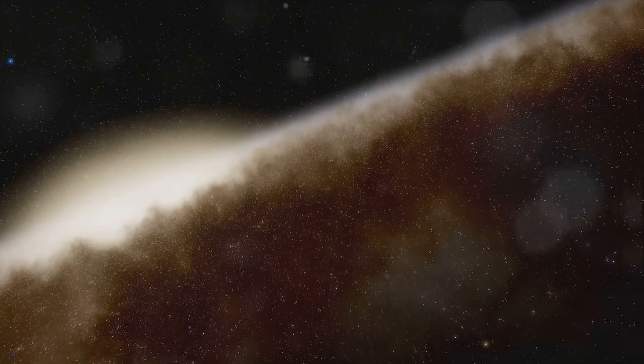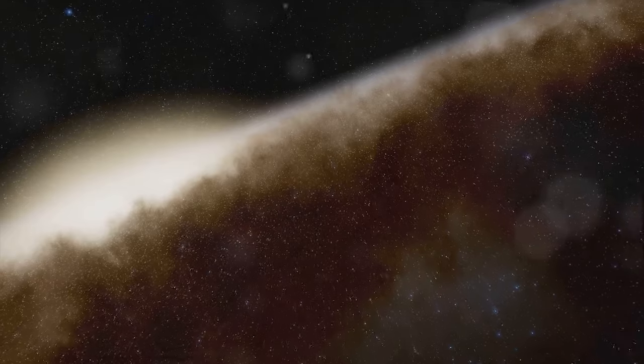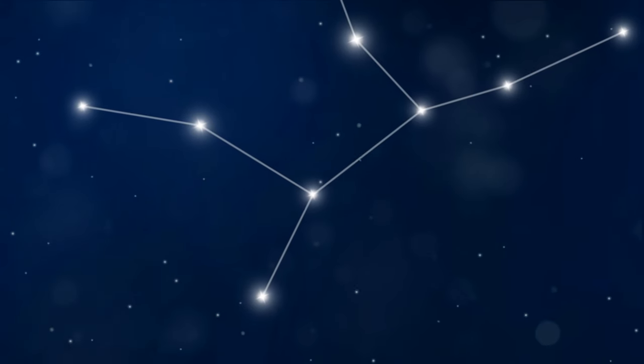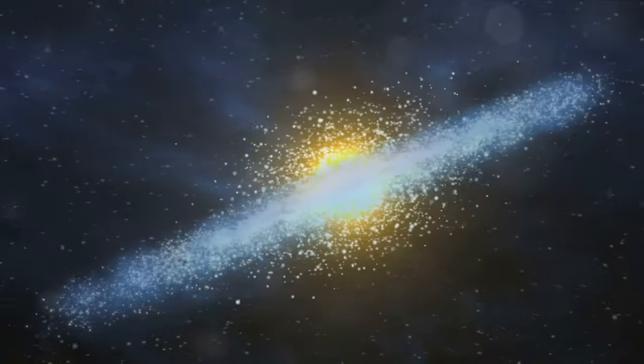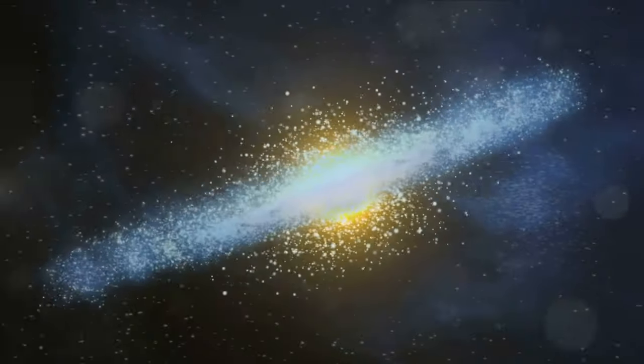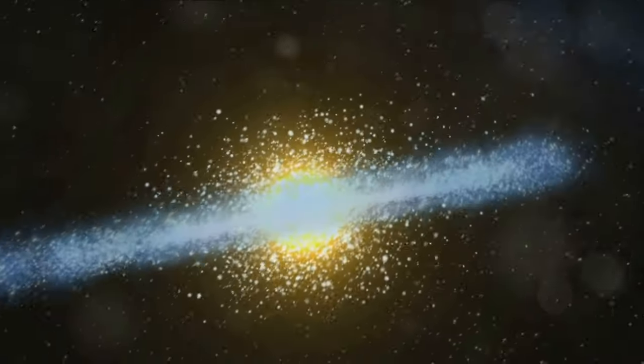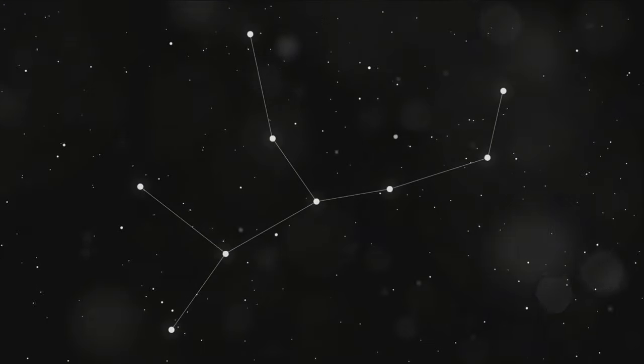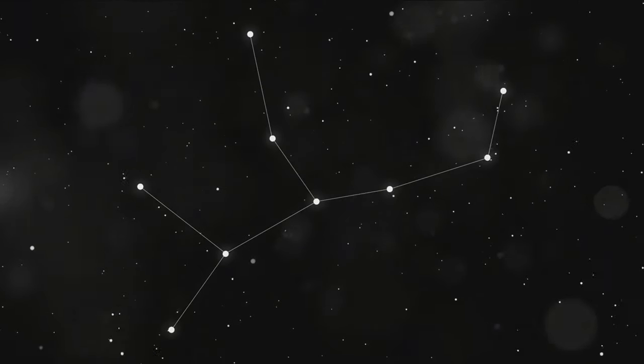This galaxy is located in a region of the cosmos that is bustling with galactic activity. The Sombrero Galaxy resides in the southern constellation of Virgo, named after the Greek goddess of innocence and purity. This constellation is a celestial metropolis, home to a cluster of over 1,000 galaxies. Yes, you heard it right, over 1,000 galaxies, each with its own unique features and stories.